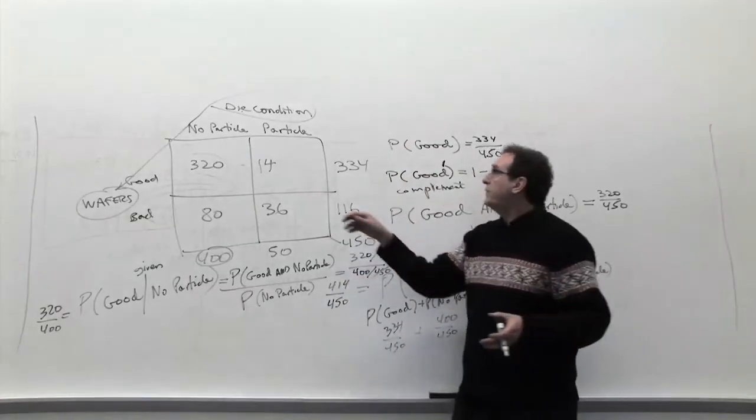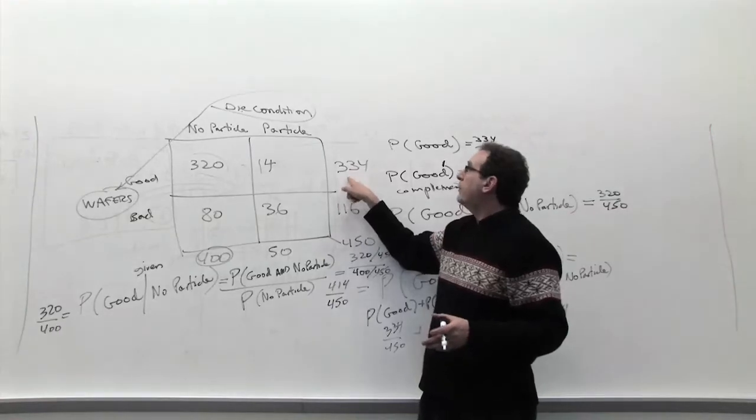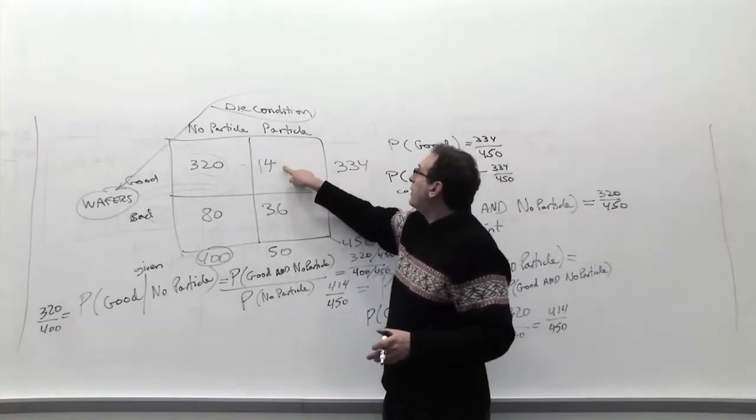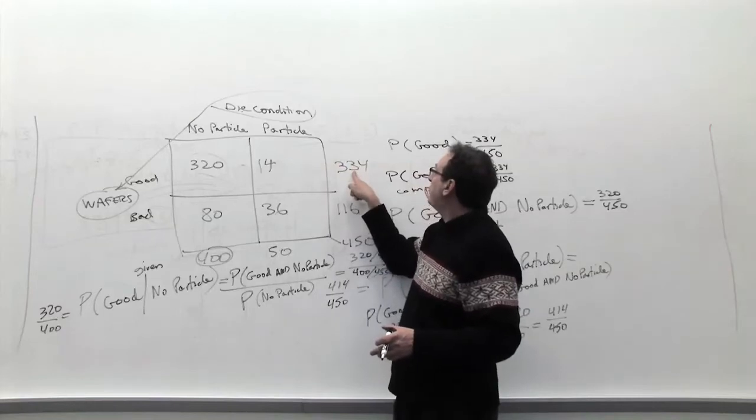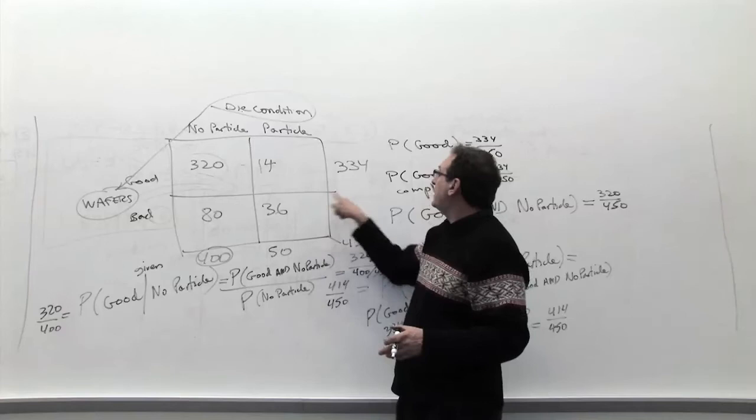The common sense way is by simply getting a ratio of 320 by 330. How many of the ones with particles are good? 14 out of 334. How many of the ones with particles are bad? 36 out of 116.